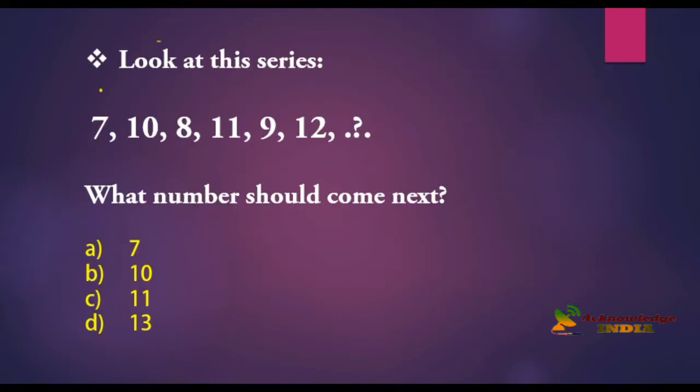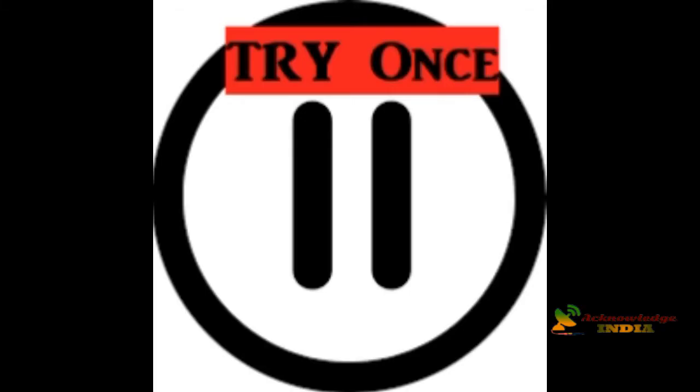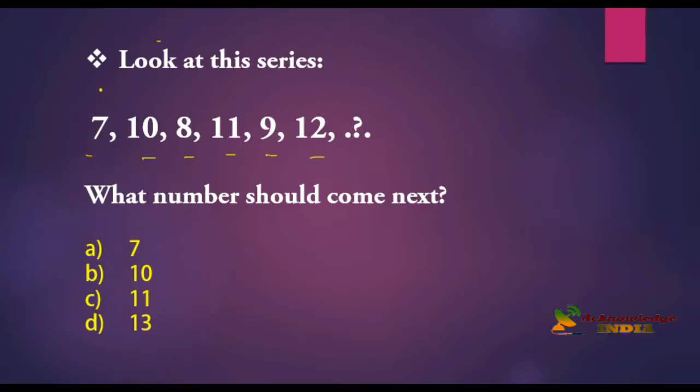So friends, in this first series, we observe 7, 10, 8, 11, 9, 12. Actually, these are like alternative increments in the series, but there is a logic in this. The logic is that it's an alternating addition and subtraction series.